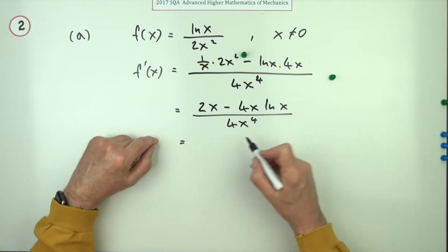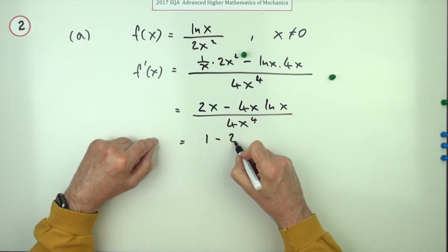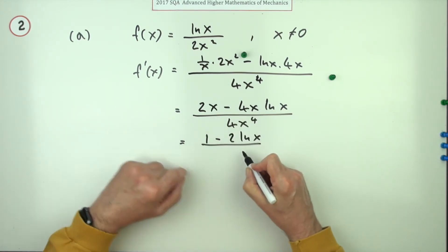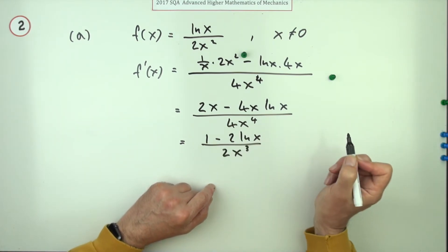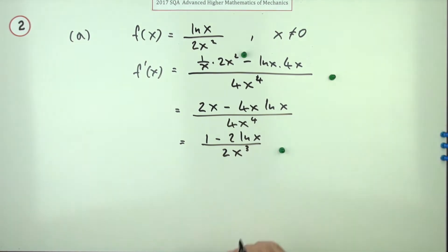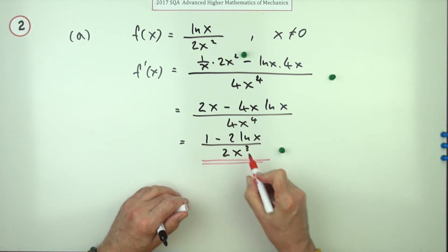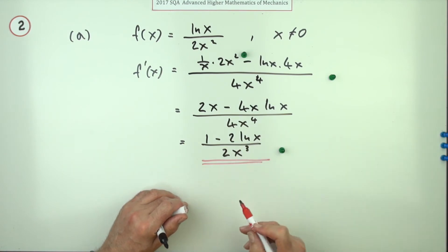Then take out the common factor of 2x, so 2x divides from all the terms above and below, so it'll be 1 minus 2 ln x over, and dividing that by 2x drops it down to 2x cubed. That's the last mark. Suppose if you felt so inclined you could pop that 2 inside as a power and have 1 minus ln x squared but that'll do.